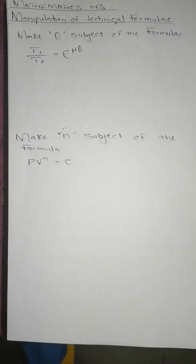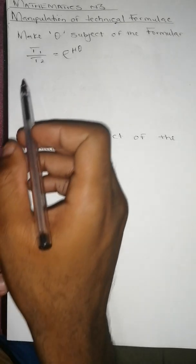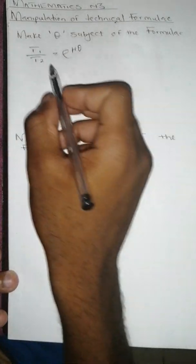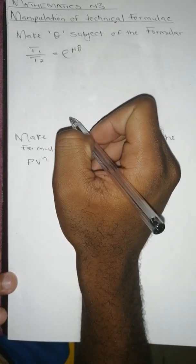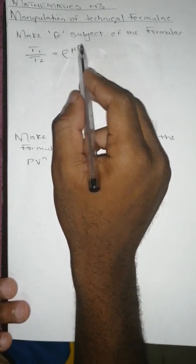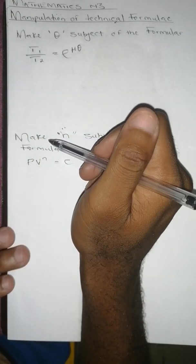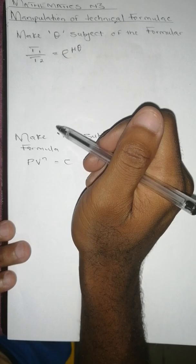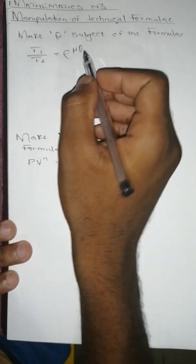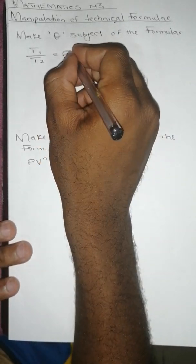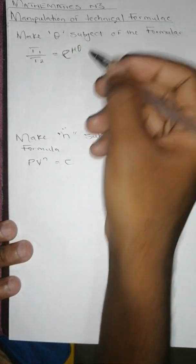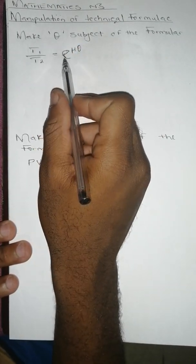Greetings guys, this is Magnanimous Lectures Online. We're doing Mathematics N3, manipulation of technical formulas. The first question we're told to make theta the subject of the formula, and this is the expression which we are given. So that means we have to make this subject of the formula so this should equal something. To do that, we have to use different rules that apply in mathematics.